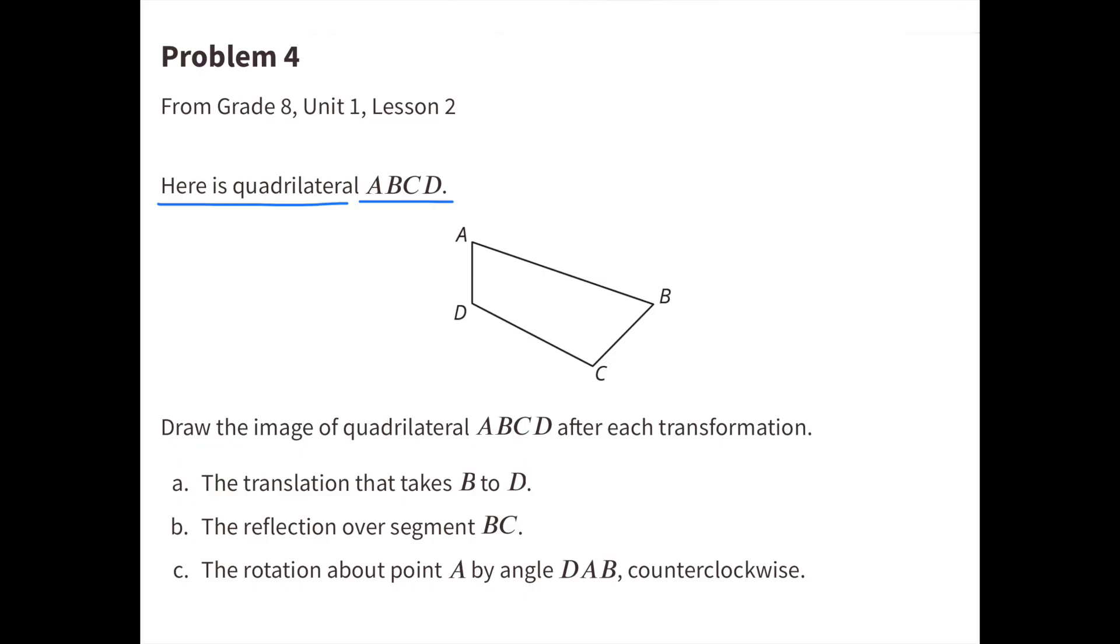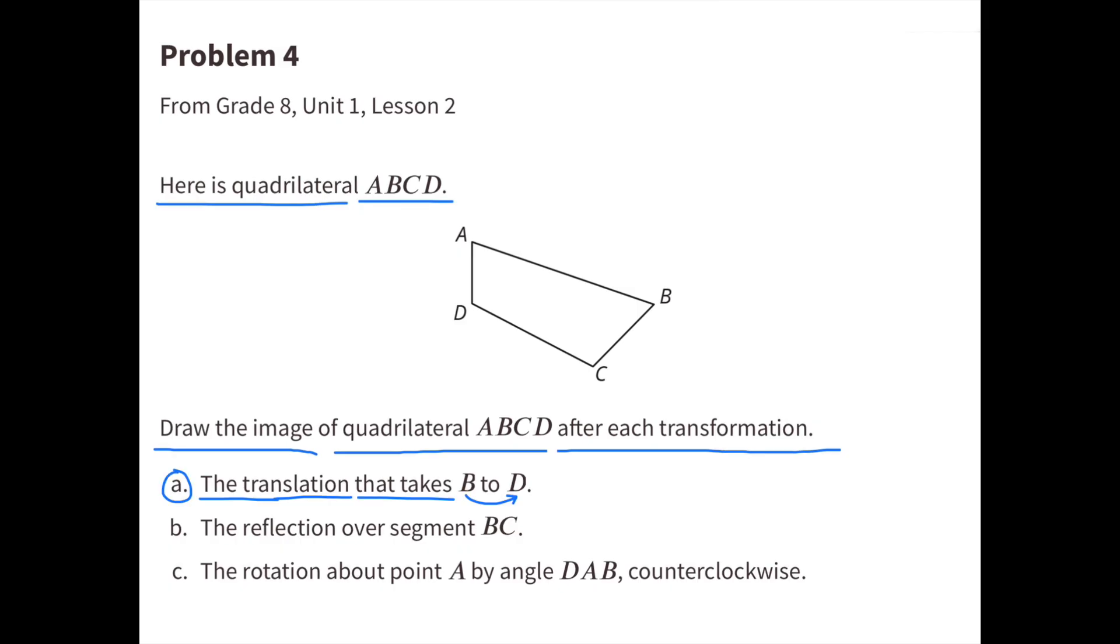Number 4. Here is quadrilateral ABCD. Draw the image of quadrilateral ABCD after each transformation. A. The translation that takes B to D.